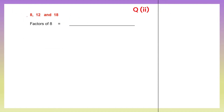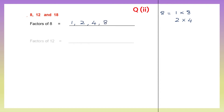Here we have three numbers. So first let's find the factors of 8. 1 into 8 is 8, then 2 fours are 8. That's it, nothing else will give us 8. So the factors of 8 are 1, 2, 4 and 8. Now let's find the factors of 12.